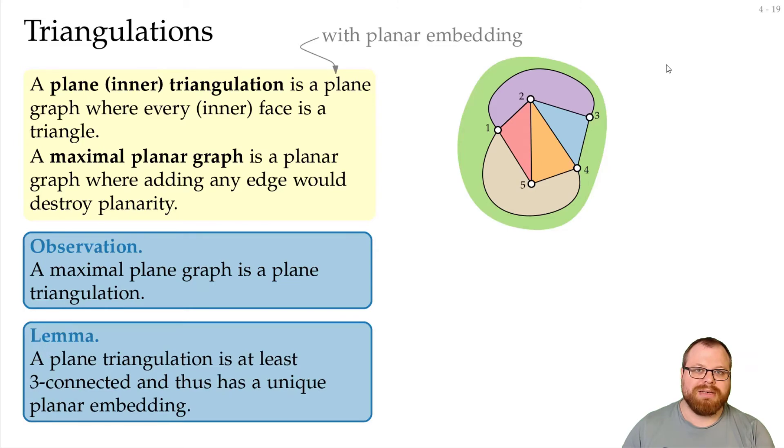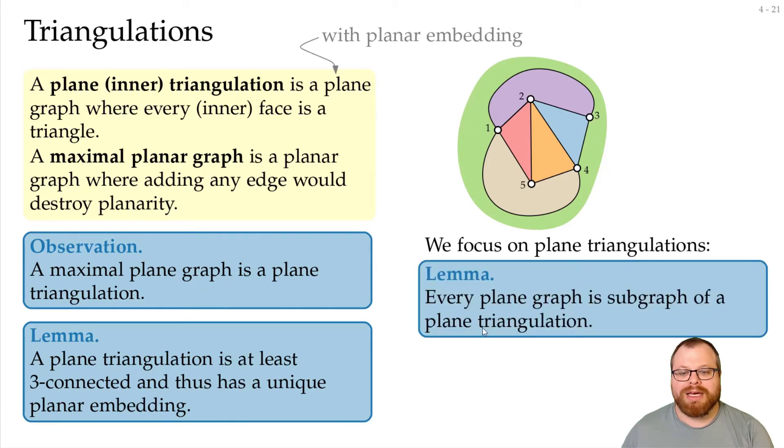We can observe that a maximal plane graph is exactly a plane triangulation, so these two graph classes are exactly the same. One can also easily prove that a plane triangulation is at least three-connected, and so it has a unique planar embedding. What's great about this is, if we focus on plane triangulations, then we can draw all the planar graphs, because every plane graph is a subgraph of a plane triangulation.